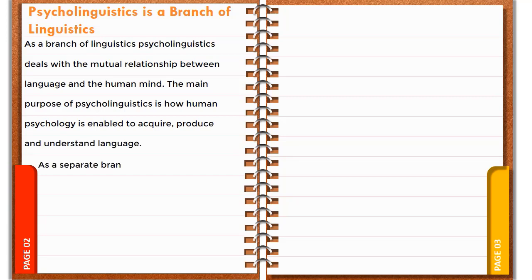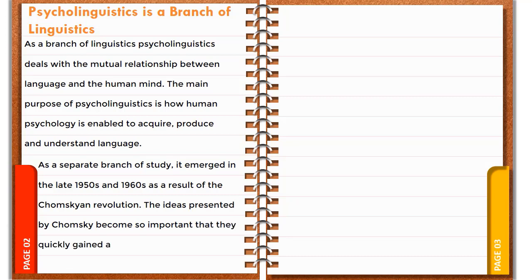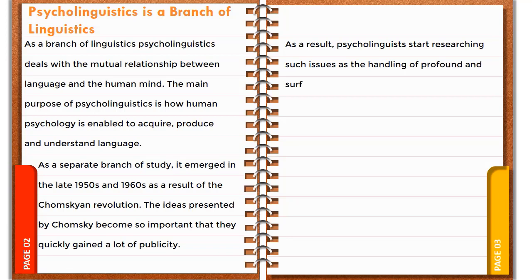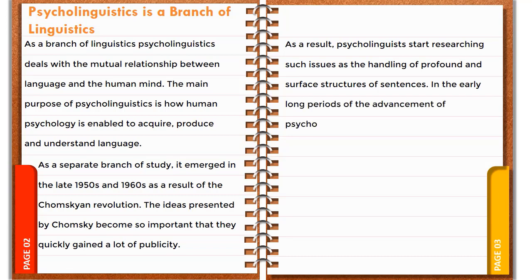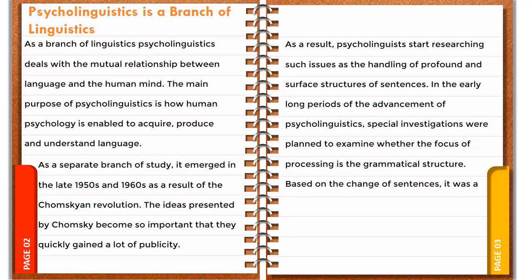As a separate branch of study, it emerged in the late 1950s and 1960s as a result of the Chomskyan revolution. The ideas presented by Chomsky became so important that they quickly gained a lot of publicity. As a result, psycholinguists started researching issues such as the handling of deep and surface structures of sentences. Special investigations were designed to examine whether the focus of processing is the grammatical structure based on sentence transformations. It was initially found that simplicity of processing was associated with syntactic complexity.